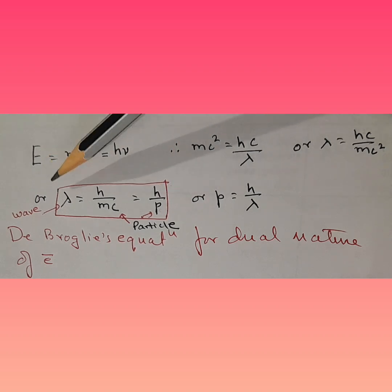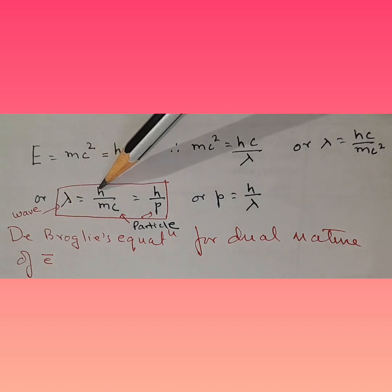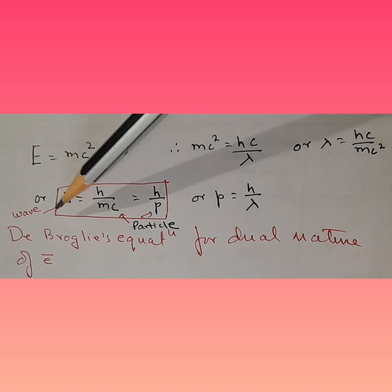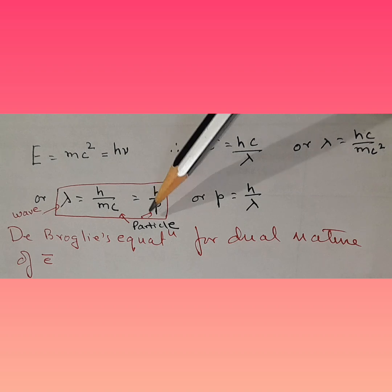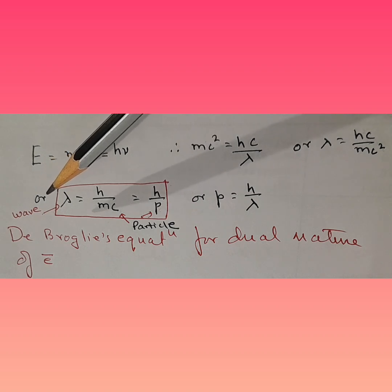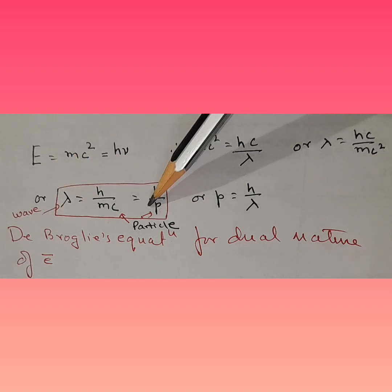h is Planck's constant. So de Broglie's equation for dual nature of electron is this, where he conveyed that matter has dual nature, that is wave nature as well as particle nature. Now mass, whenever we talk in terms of mass, it's the property of a particle. He also conveyed that electrons have this dual nature, so could be applied to electrons also.